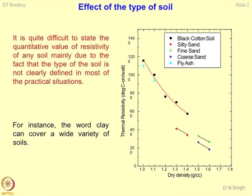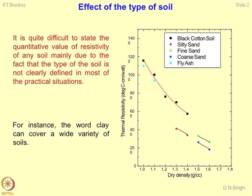By this time you are aware of the thermal properties of geomaterials: thermal resistivity, conductivity, diffusivity, and specific heat. The number one parameter influencing these properties is the type of soil. It is quite difficult to state the quantitative value of resistivity of any soil, mainly due to the fact that the type of the soil is not clearly defined in most situations.